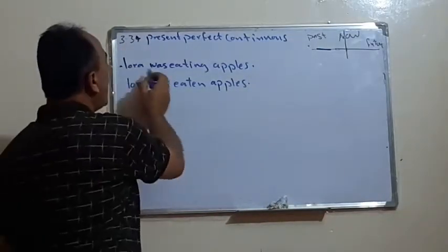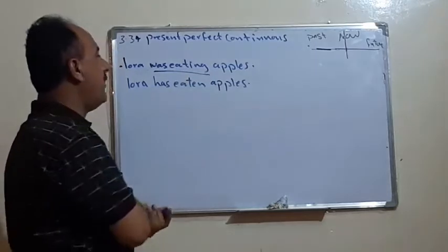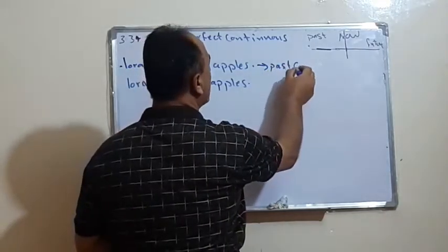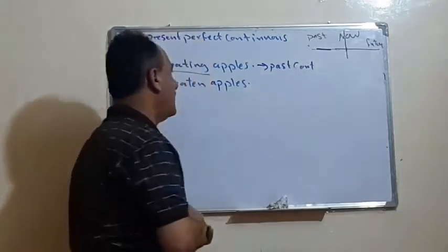Take the first example: Laura was eating apples. Of course, we know this is in what? In the past continuous. In the past continuous.